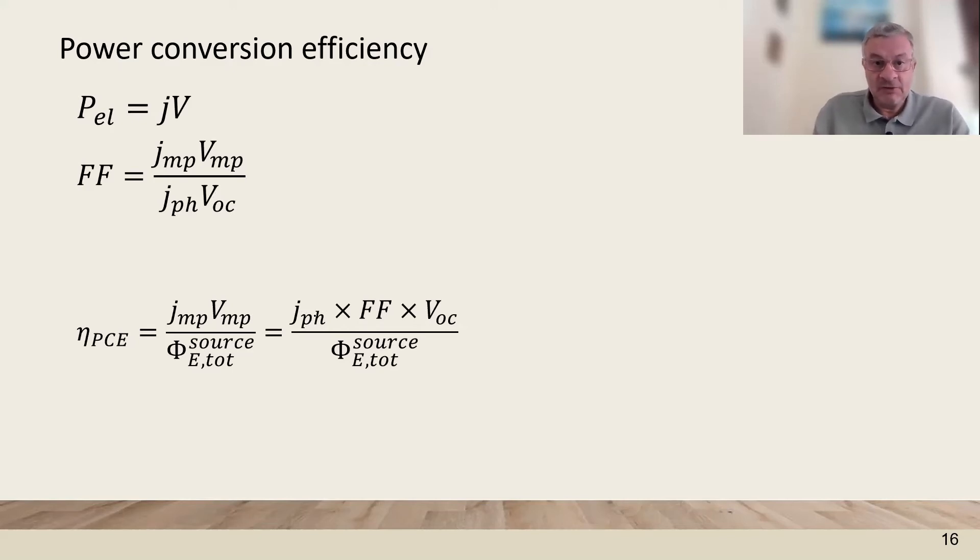The photocurrent, the fill factor and the VOC. So this is the three things you have to optimize in order to increase the power conversion efficiency of the solar cell.